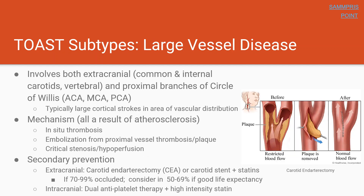Let's get into our first TOAST subtype: large vessel disease. Large vessel disease is a disease of the carotids, which are considered extracranial vessels, and the proximal branches of the circle of Willis — the ACA, MCA, and PCA — which are considered intracranial large vessels. Given that these large vessels affect a large area of the cortex, these are typically very large strokes and can be quite debilitating.